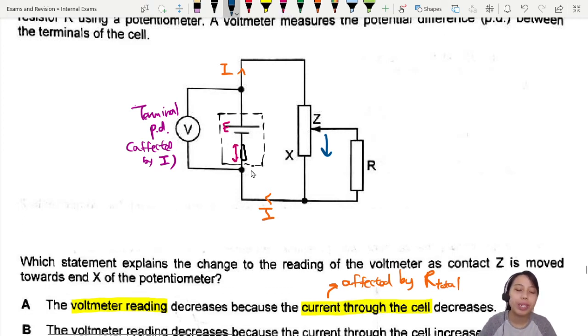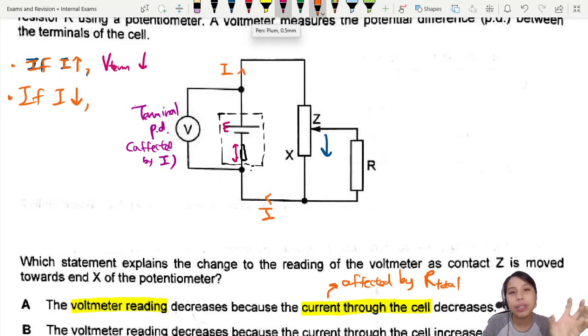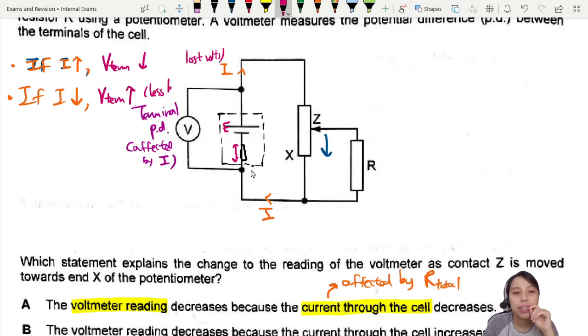Let's write out the list first. If current increase, you will lose a lot of energy in lost volts in the battery, so your terminal PD will decrease. This is to keep my brain together. Now if the current decrease, less current, then the battery will not be so hot. That means the terminal potential difference increase - less lost volts. If current very big you lose a lot, so your terminal battery cannot give out so much energy.